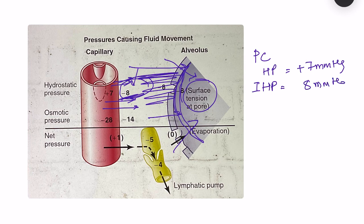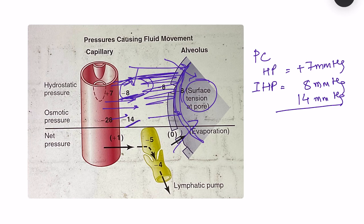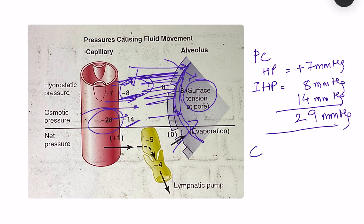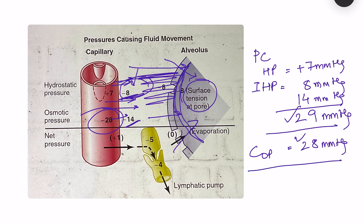Adding all the forces causing fluid movement from the capillary towards the interstitium: pulmonary capillary hydrostatic pressure, interstitial tissue hydrostatic pressure, and the oncotic pressure of the interstitial tissue which is also quite high at 14 millimeter mercury. These forces together come to 29 millimeter mercury - that is the push force. The pull force causing fluid movement from the interstitial side towards the capillary is the capillary oncotic pressure, which is 28 millimeter mercury. So the net balance is push force 29 minus pull force 28, giving plus 1 millimeter mercury.